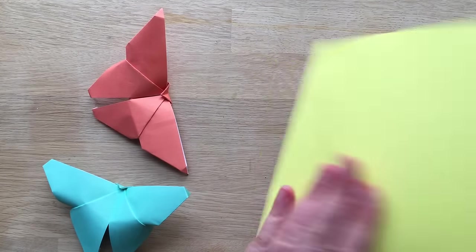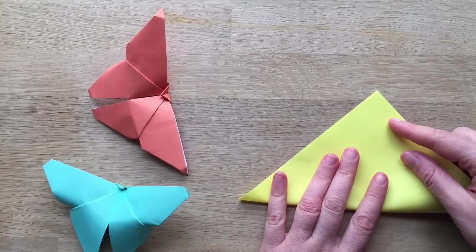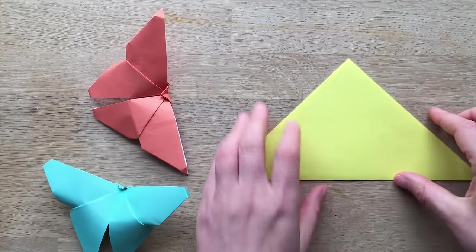This square piece of paper is the same colour on both sides. If you've got an origami sheet of paper with a colour on one side, you just have to make sure that you fold it in in a minute. I'll show you when.